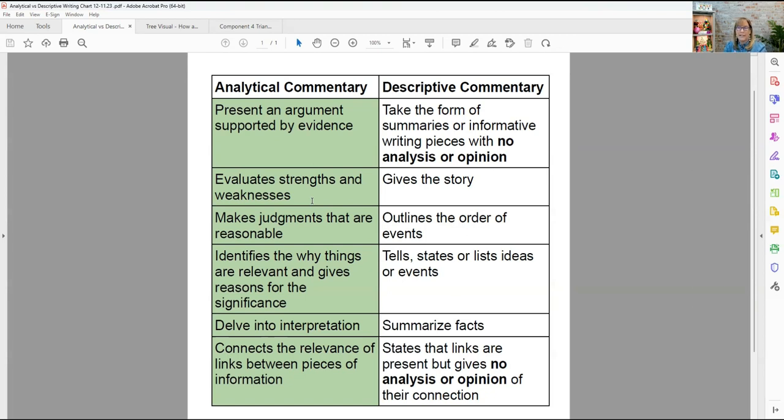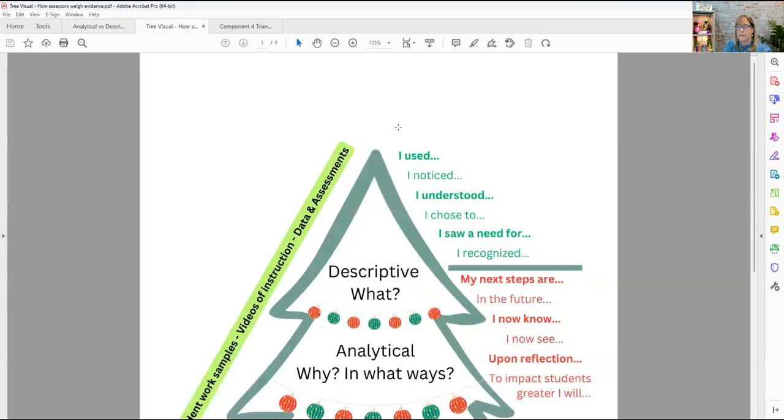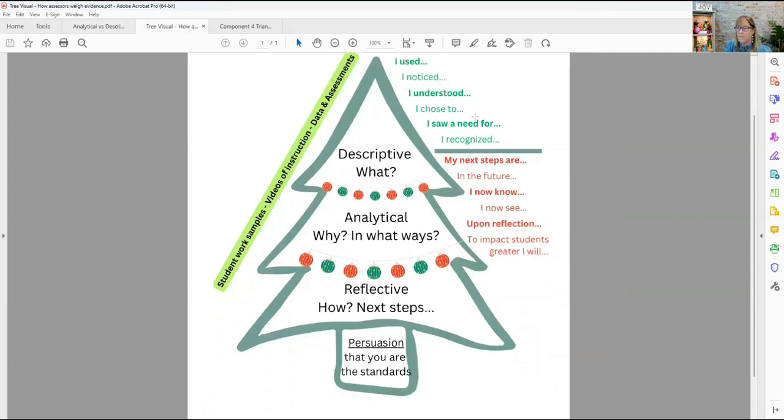You're really delving into interpretation. You're interpreting results to move forward and connect and link future decisions to past data. That's what you're doing in C4. I want you to remember this tree, which if you've watched my C3 videos, you've already seen. The root of what you want to get across to the assessor for them to find your evidence is you want to persuade, use persuasion that you are the standards for the certificate area you're trying to achieve. Persuasion is the root. How do we get to persuasion? What do we use?